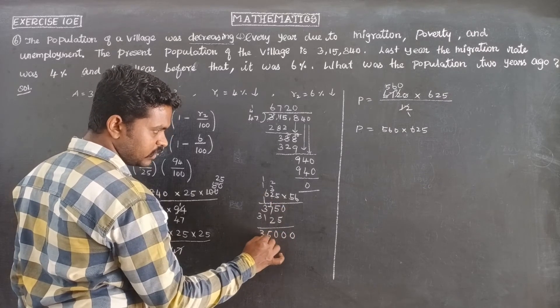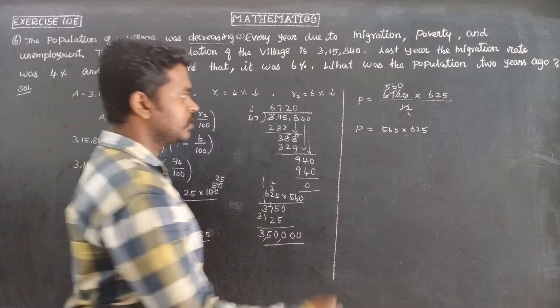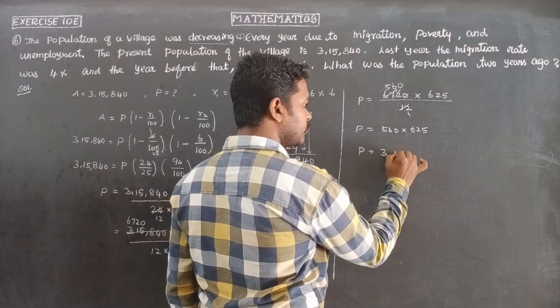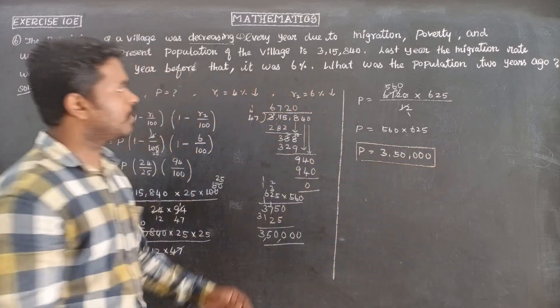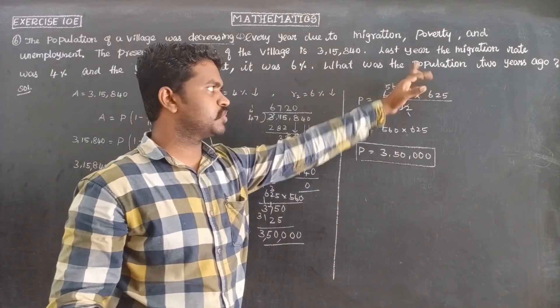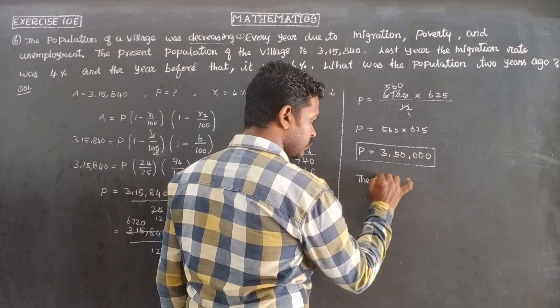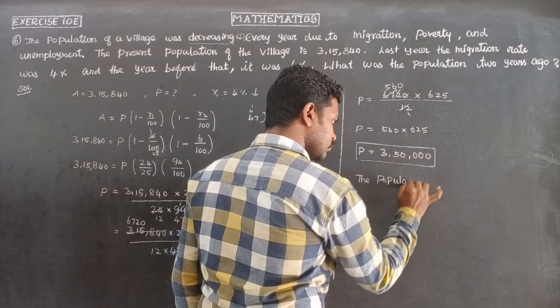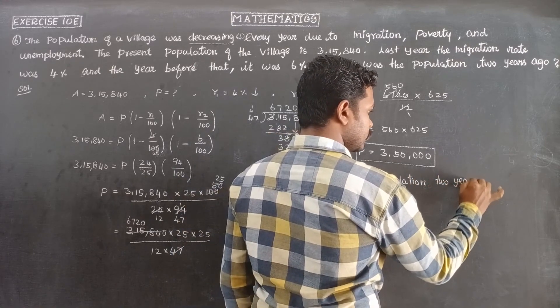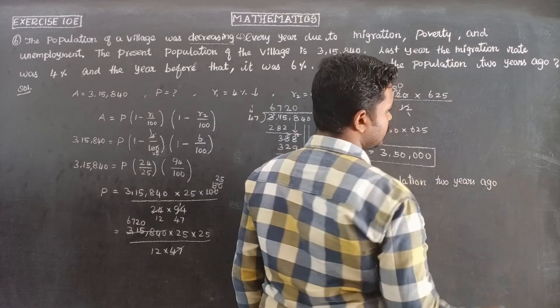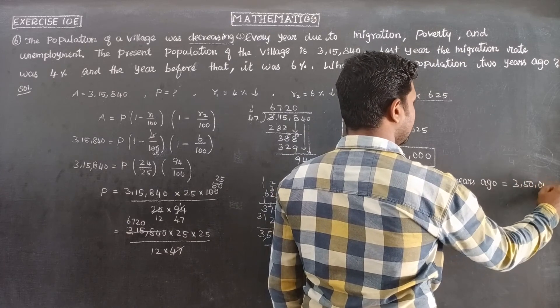So 560 times 625: the answer is 3,50,000. So the principle is 3,50,000. Therefore, the population of the village two years ago was 3,50,000.